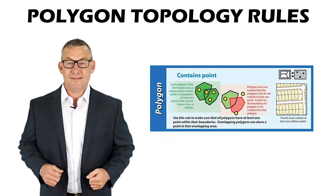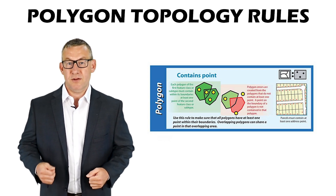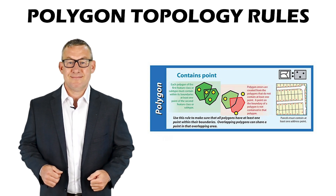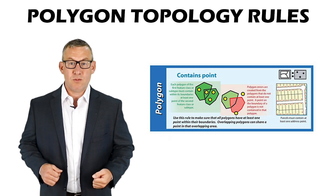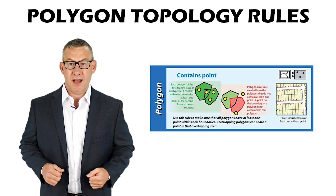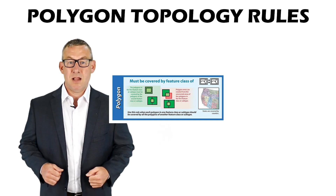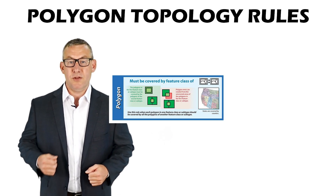Contains Point — each polygon must contain a point of another feature class. Contains One Point — each polygon must contain exactly one point of another feature class. Must Be Covered By Feature Class Of — polygons must be covered by polygons of another feature class.